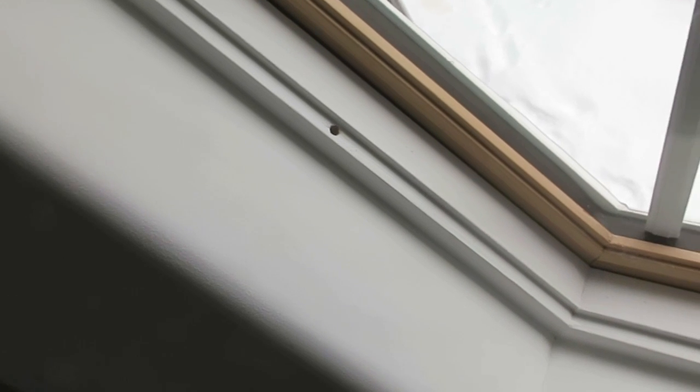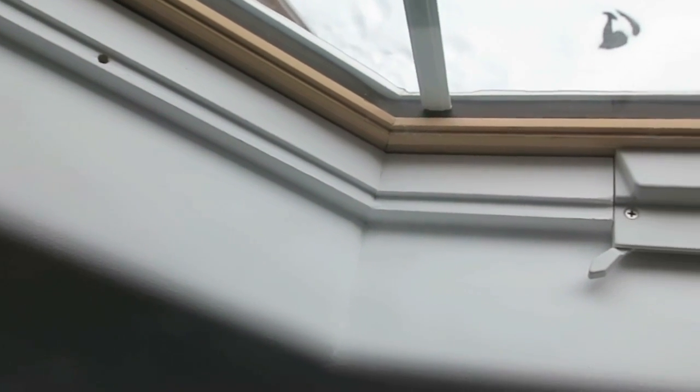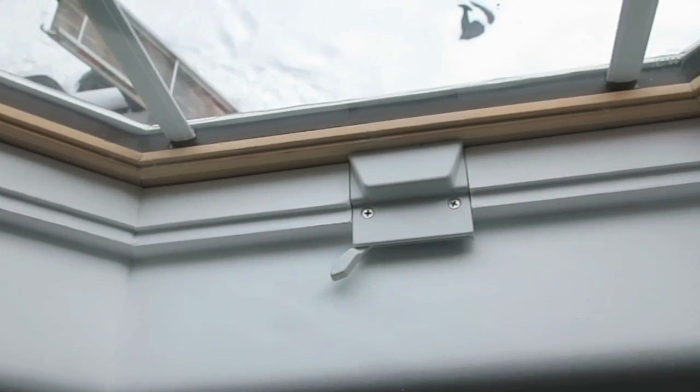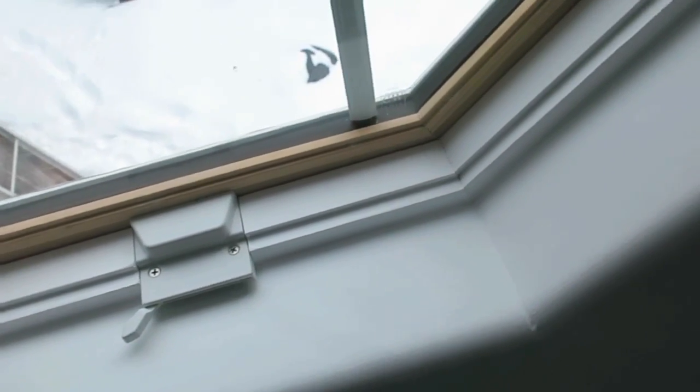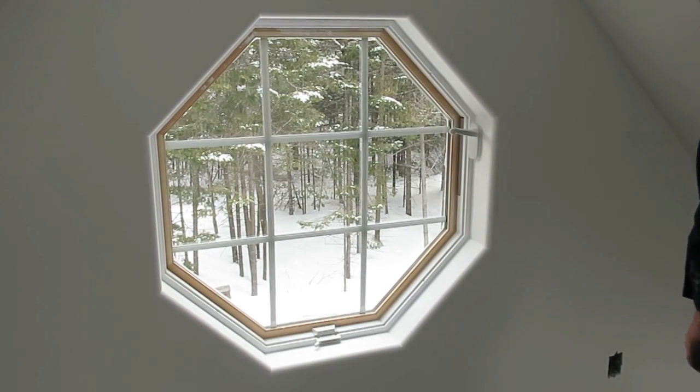One last thing before I go, we opted not to use traditional interior trim around this window, but instead a kind of plastic molding. It covers the whole jamb of the window and curves out nicely to the surrounding wall. It's paintable and gives the installation a nice clean look.